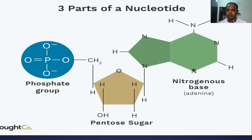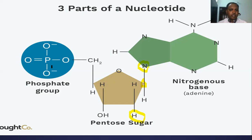The nitrogen base given here is adenine as an example — it may be adenine, guanine, cytosine, or thymine. The sugar here is deoxyribose, so this is a deoxyribonucleotide. The ninth nitrogen atom of adenine is joined with the first carbon of sugar — this bond is called the N-glycosidic bond. The phosphate group is joined with the fifth carbon of the sugar.